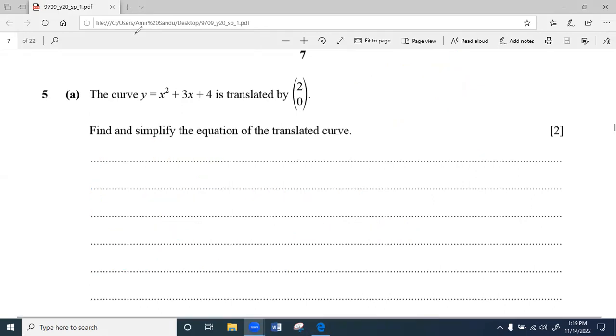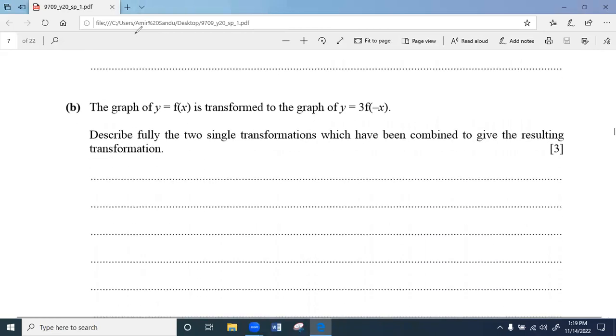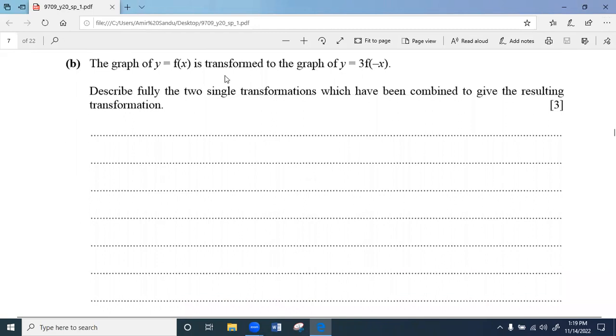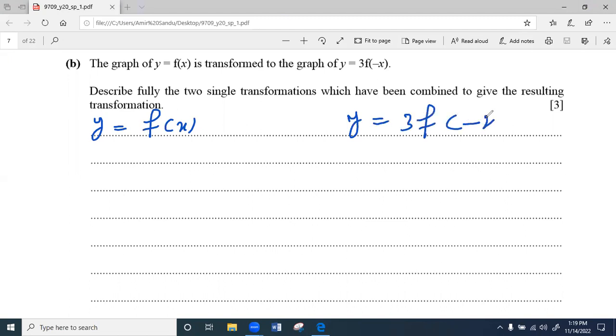Now second part. The graph of y equals f of x is translated to the graph of y equals 3f of minus x. Describe fully the two single transformations which have been combined to give the resulting transformation.